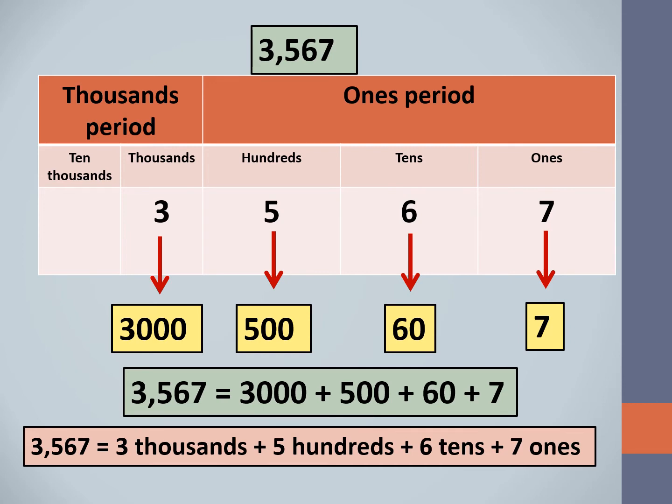We now write three thousand five hundred and sixty-seven as the sum of the place values of its digits: 3,000 + 500 + 60 + 7. We can also write the expanded form in words as three thousand plus five hundred plus six tens plus seven ones.